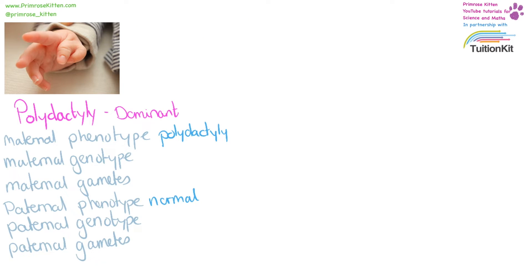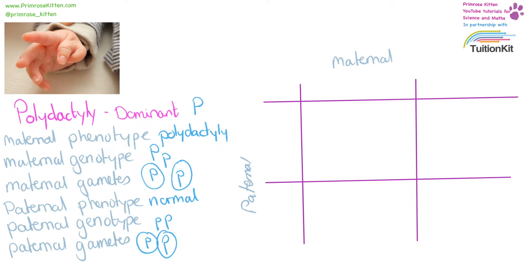For this example, the mother has polydactyly and the father has the normal expected number of fingers and toes. The gene I'm going to use for polydactyly is capital P. So the maternal genotype is going to be capital P, lowercase p, meaning her gametes are going to be one capital P and one lowercase p. The paternal genotype is going to be both lowercase p's and the gametes are also going to be lowercase p's. We draw our cross and put in the maternal gametes — capital P and lowercase p — and the paternal gametes — lowercase p, lowercase p.